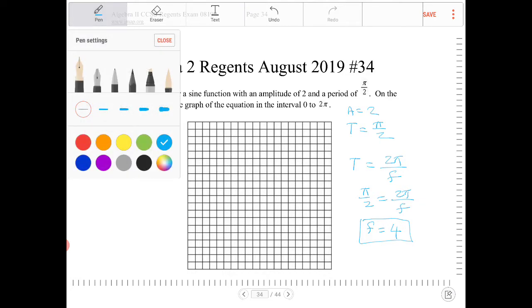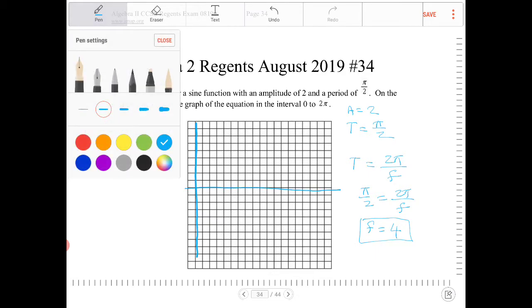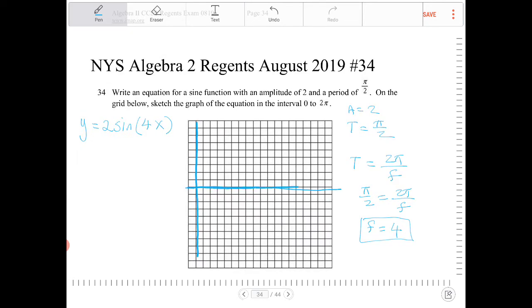Okay, I am going to use a slightly thicker pen here to draw on this. So we're graphing this from 0 to 2 pi. So I'm going to make that even thicker. Okay, so from 0 to 2 pi,